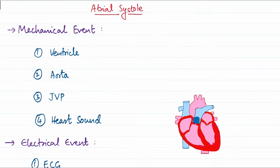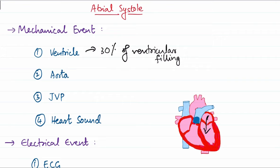Atrial systole occurs at the end of joint diastole. The atria starts to contract, and blood flows into the ventricles. It is responsible for the final 30 percent of ventricular filling — 70 percent occurs during joint diastole, and 30 percent occurs during atrial systole. Its duration is 0.1 seconds. By the end of atrial systole, ventricular filling is complete, and the volume of the ventricle at this point is called the end-diastolic volume, which is around 130 milliliters.